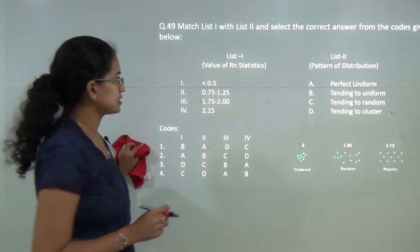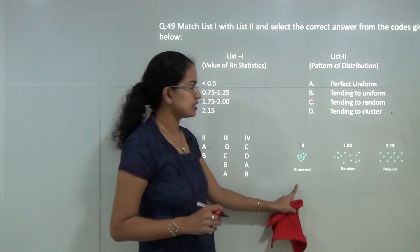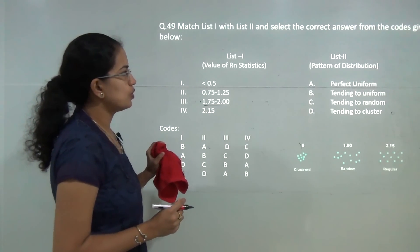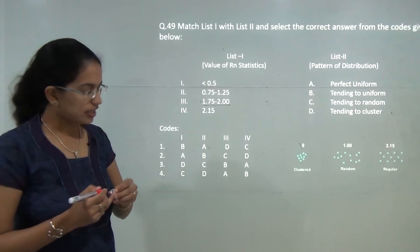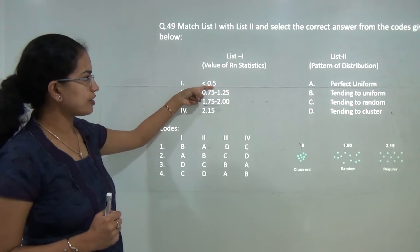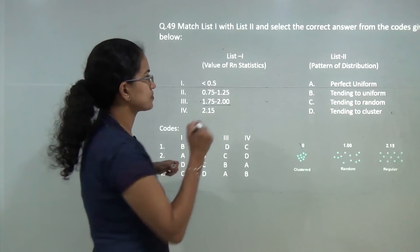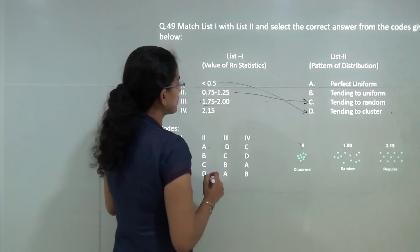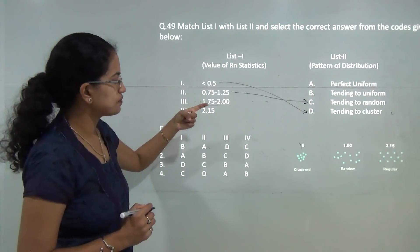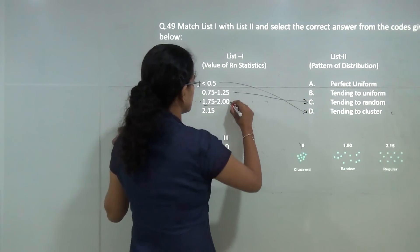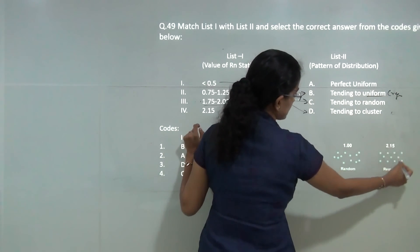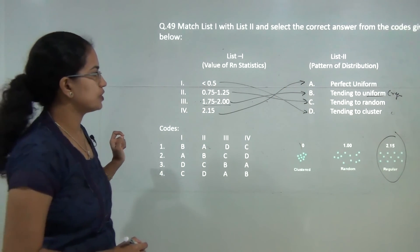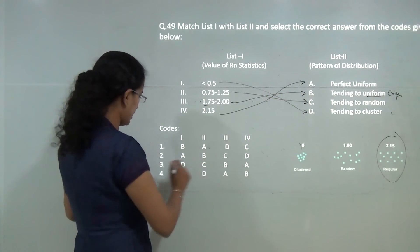To find the value of R in nearest neighbor statistics: a value of 0 indicates clustering; 2.15 shows a perfectly uniform or regular pattern. Values from 1.7 to 2 tend towards uniform/regular; a value close to 1 tends towards random; less than 0.5 tends towards clustered. So the correct matching is C, D, B and A — option 3 is correct.